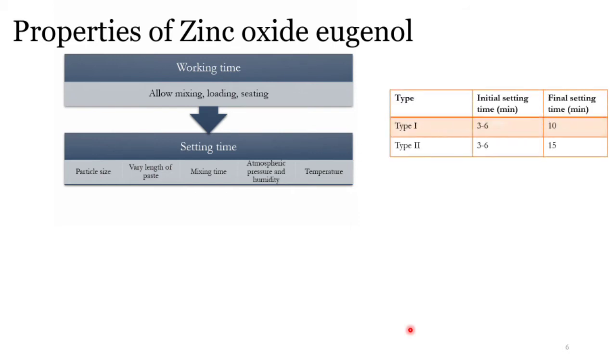For Type 1 and Type 2, there is an initial setting time, which refers to the period from mixing till it forms a string-like material. It's the time till you should stop mixing. The impression should be loaded into the oral cavity before it shows initial setting. This is around 3 to 6 minutes for both types. Final setting time is when the material fails to show depression or penetration of more than 0.2 mm when you put a lead ball on top. It's 10 minutes for Type 1 and 15 minutes for Type 2.